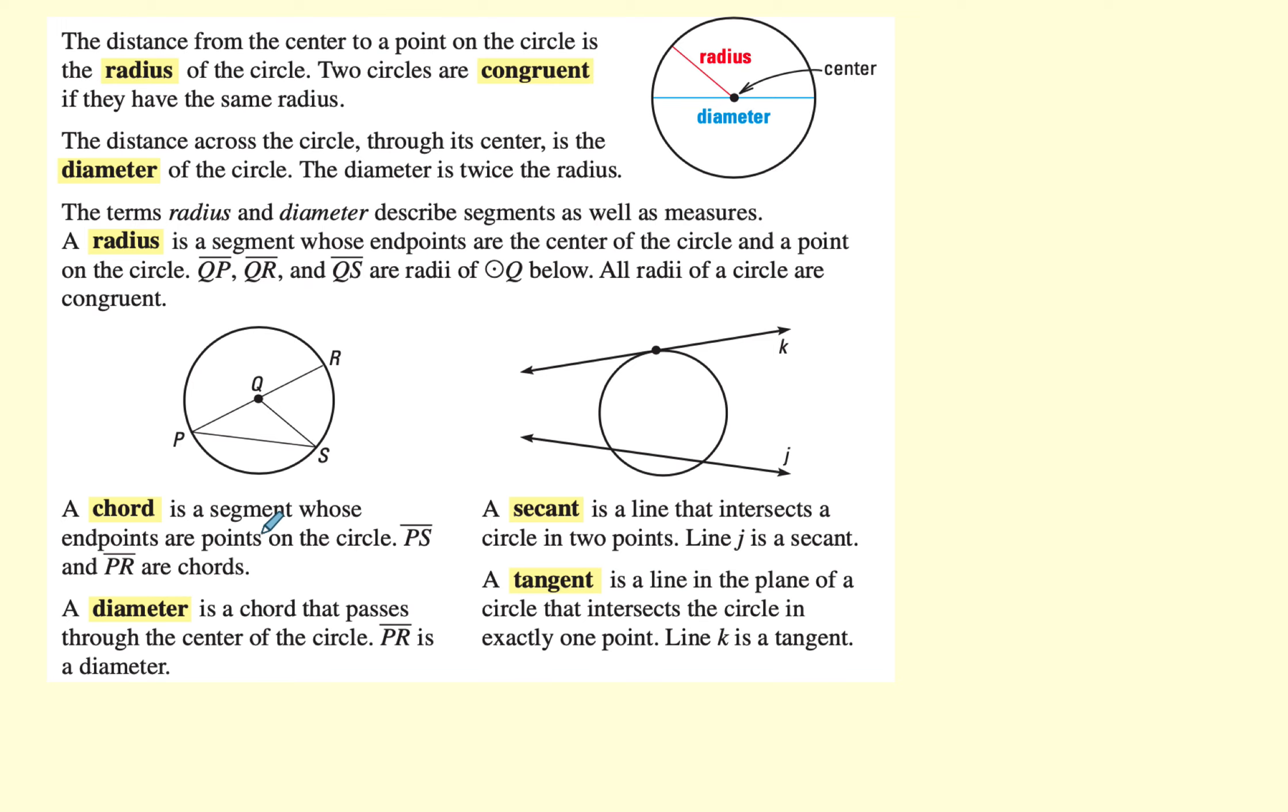A chord is a segment whose endpoints are on the circle. Segment PR is also a chord, but we have a special name for this chord. When it goes through the center, it's called a diameter. A line that intersects the circle twice is called a secant. A line that intersects the circle only once is called a tangent, and that's what we're going to be working on.